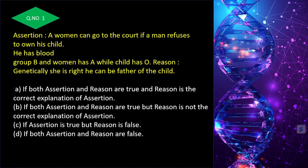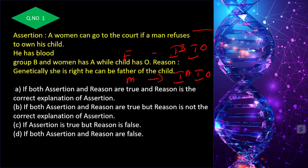Assertion-reason questions: A woman can go to court if a man refuses to own his child — the man has blood group B and the woman has blood group A, while the child has blood group O. The man could be IB/IO and the woman IA/IO, making it possible for the child to be IO/IO (blood group O). So genetically she is correct. Assertion and reason are both correct — answer is A.